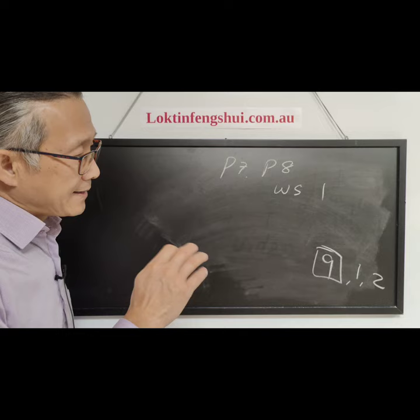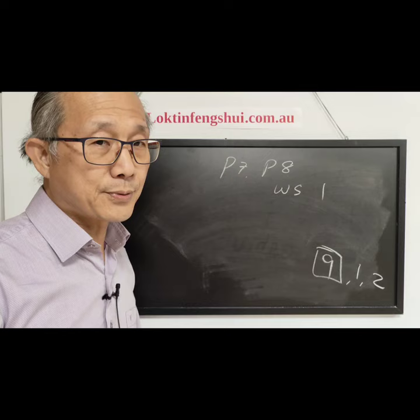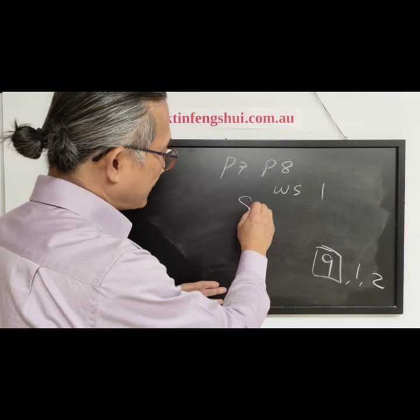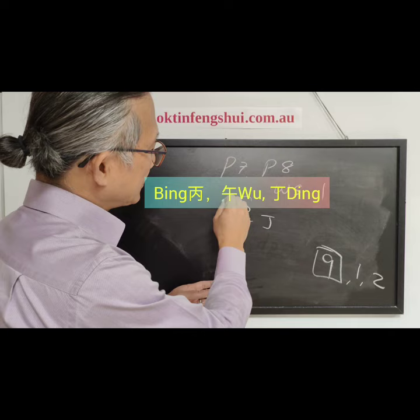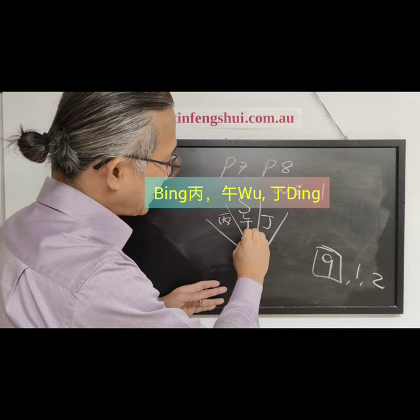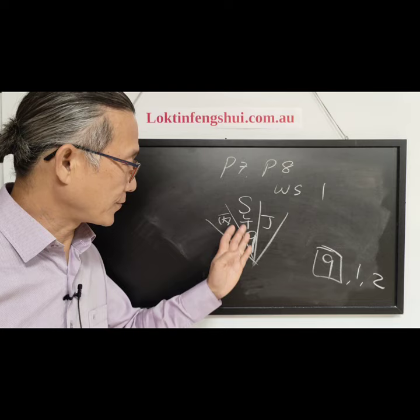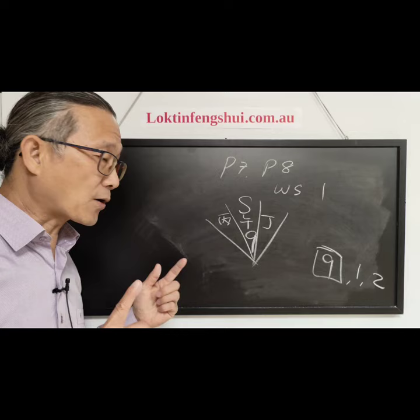From the 24 mountain point of view, we remember that facing south — the south has Bing, Wu, and Ding. Their Luo Shu number is nine, so that's also a period nine house if you open the door there. We also talk about the replacement star, which can be looked at as a period indicator as well.